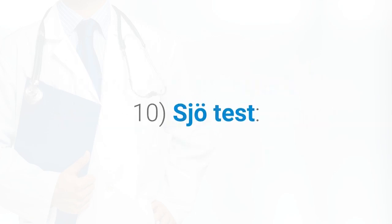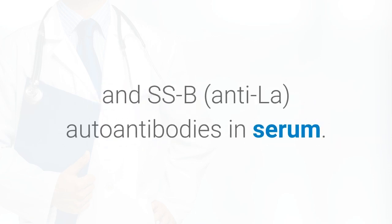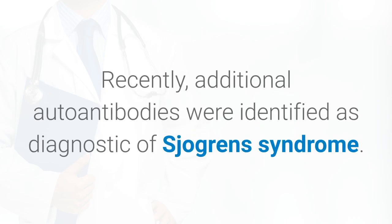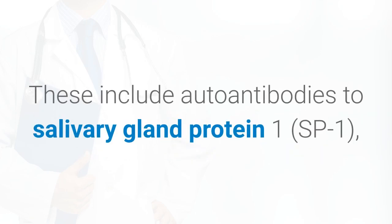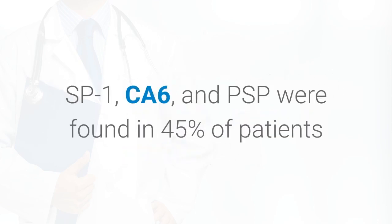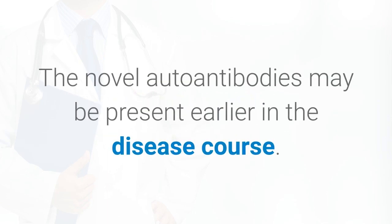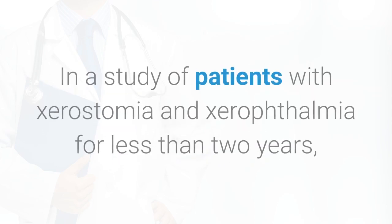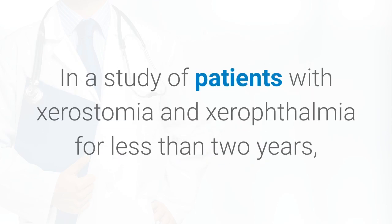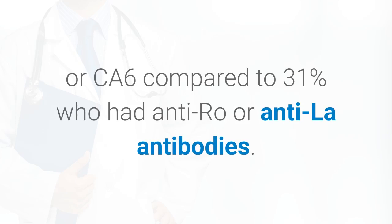Traditionally, Sjogren's syndrome has been diagnosed using the detection of SSA (anti-Ro) and SSB (anti-La) autoantibodies in serum. Recently, additional autoantibodies were identified as diagnostic of Sjogren's syndrome: autoantibodies to salivary gland protein 1 (SP1), carbonic anhydrase 6 (CA6), and parotid secretory protein (PSP). SP1, CA6, and PSP were found in 45 percent of patients who met clinical criteria for Sjogren's syndrome but tested negative for anti-Ro and anti-La. In a study of patients with xerostomia and xerophthalmia for less than two years, 76 percent had autoantibodies to SP1 or CA6, compared to 31 percent who had anti-Ro or anti-La antibodies.